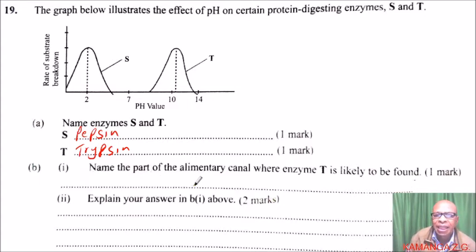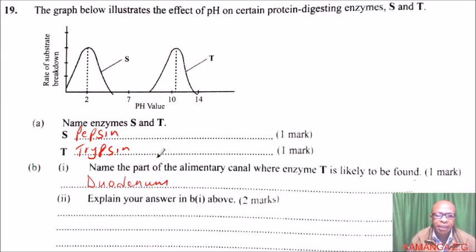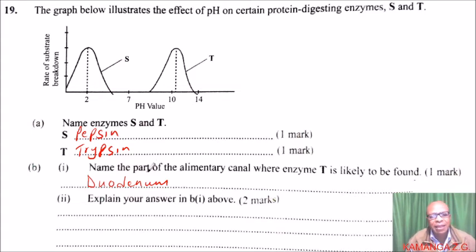Enzyme T, which is trypsin, is found in the duodenum. So the answer to part B(i) is the duodenum. Roman numeral two then asks us to explain our answer in B above.